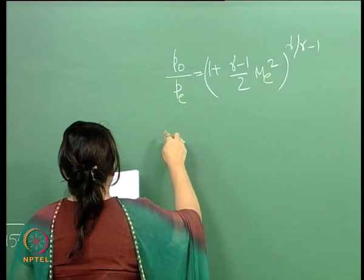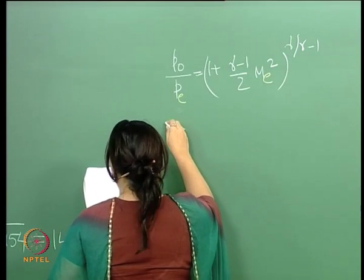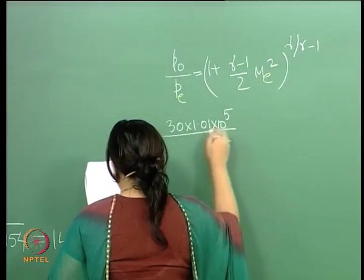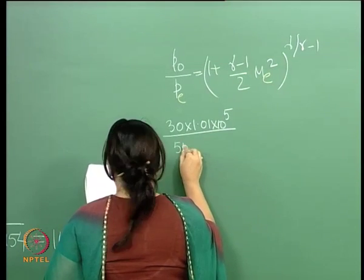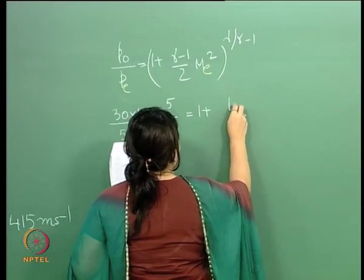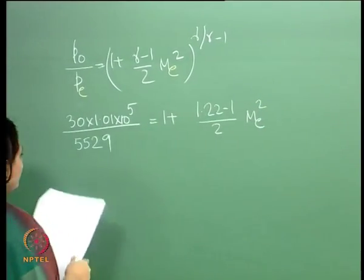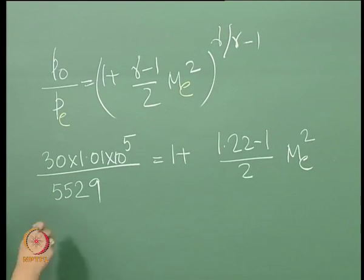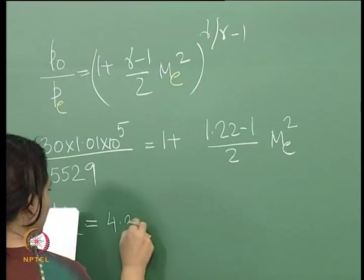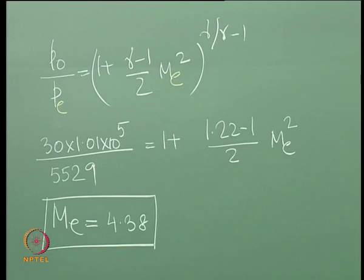P_0 is 30 atmospheres and P_e is the ambient pressure. Writing out P_0 / P_e equals 1 plus (gamma-1)/2 times M_e squared, raised to the appropriate power, and from here we can calculate the exit Mach number. We get an exit Mach number of just over 4 — approximately 4.38.